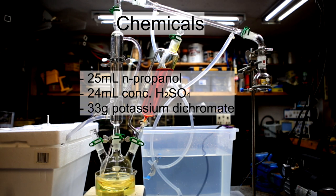For this experiment I used 25 milliliters of n-propanol, 33 grams of potassium dichromate, 24 milliliters of concentrated sulfuric acid, and 200 milliliters of distilled water.